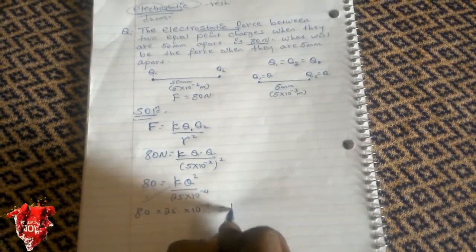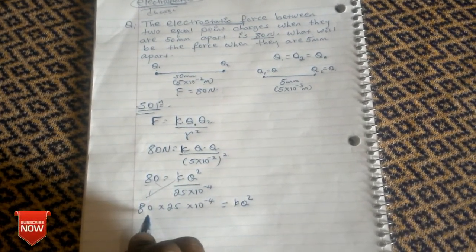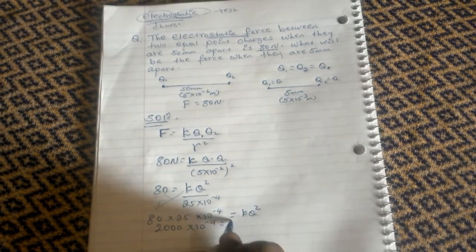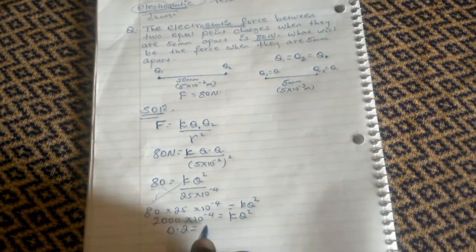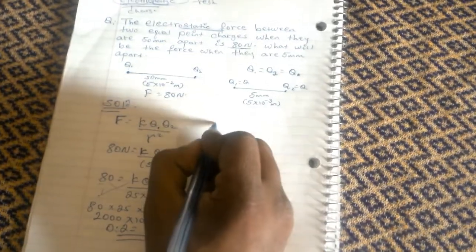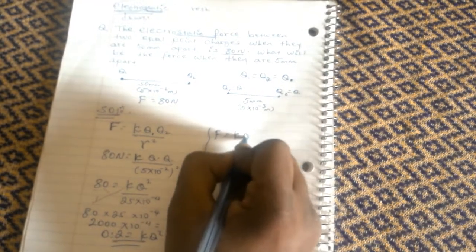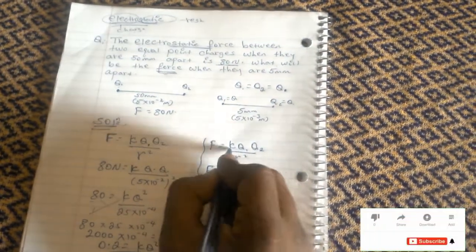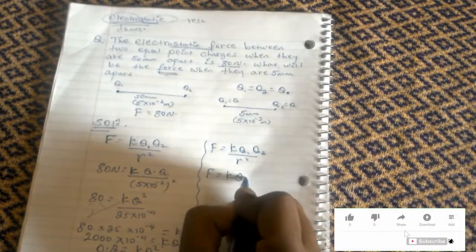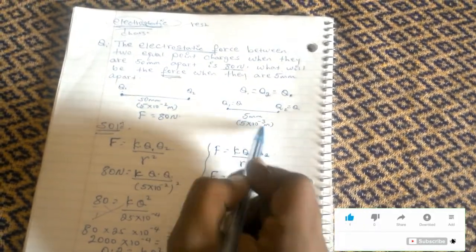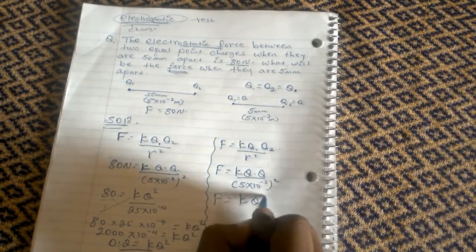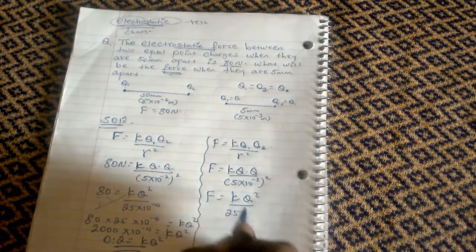That gives us 2000 times 10 raised to minus 4, which equals k times Q squared. This simplifies to 0.2, which equals k times Q squared. So k times Q squared equals 0.2. Now for the second part: force equals k times Q1 times Q2 over r squared. The new radius is 5 times 10 raised to minus 3 meters. So F equals k times Q squared over 25 times 10 raised to minus 6.